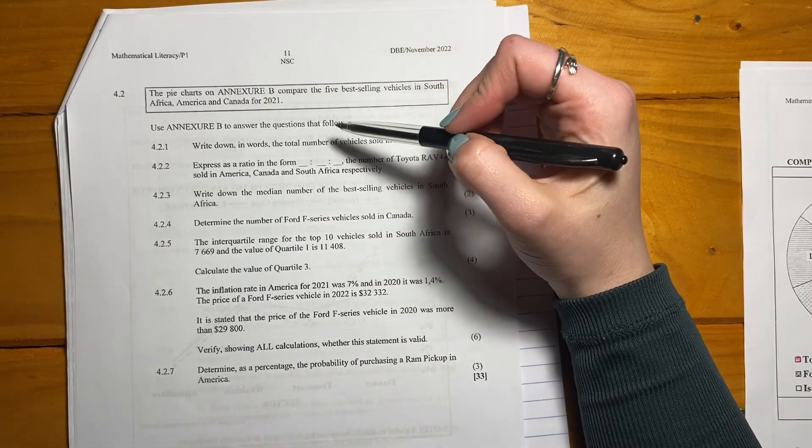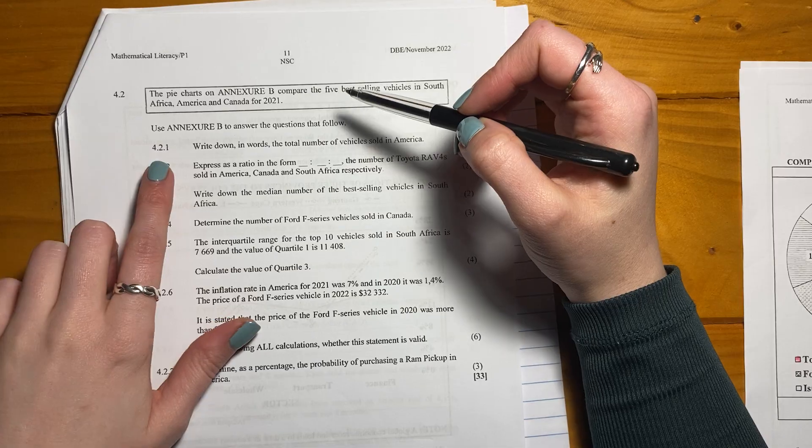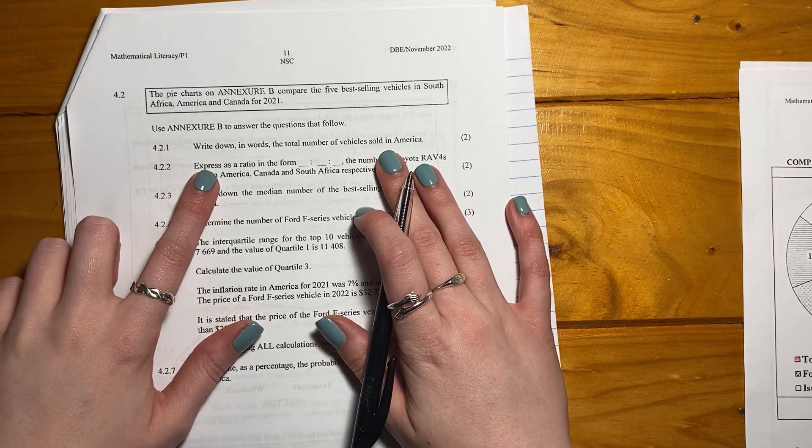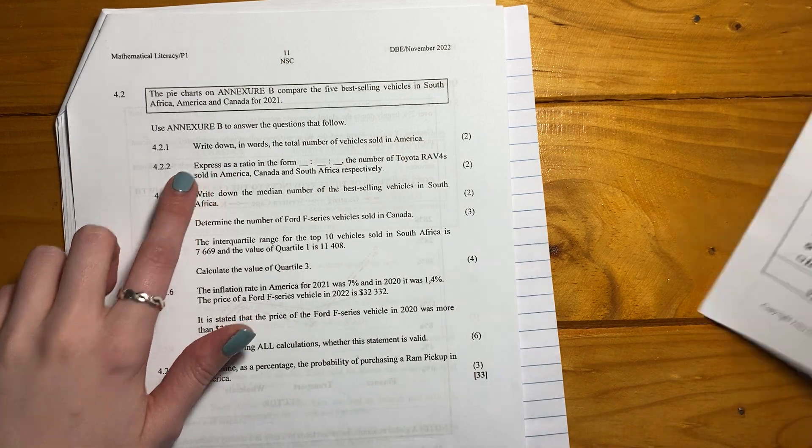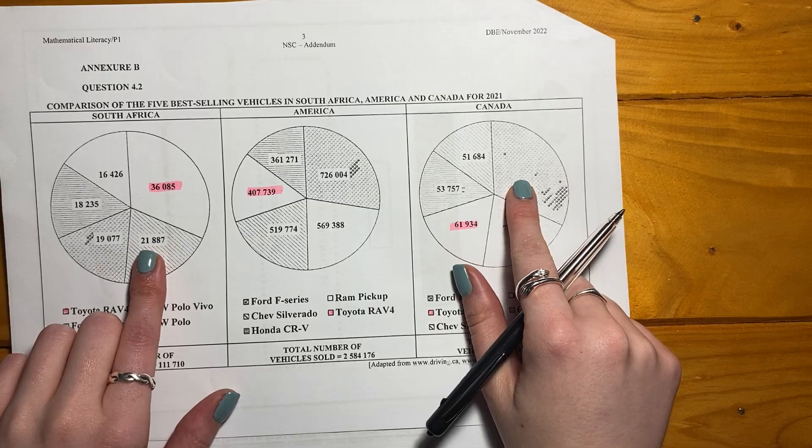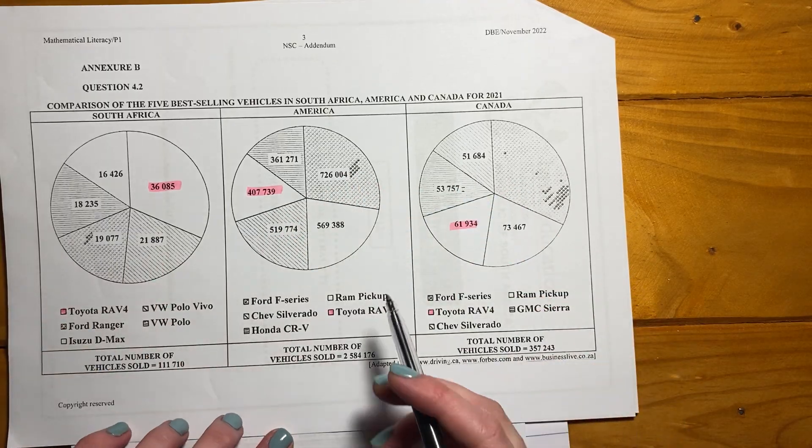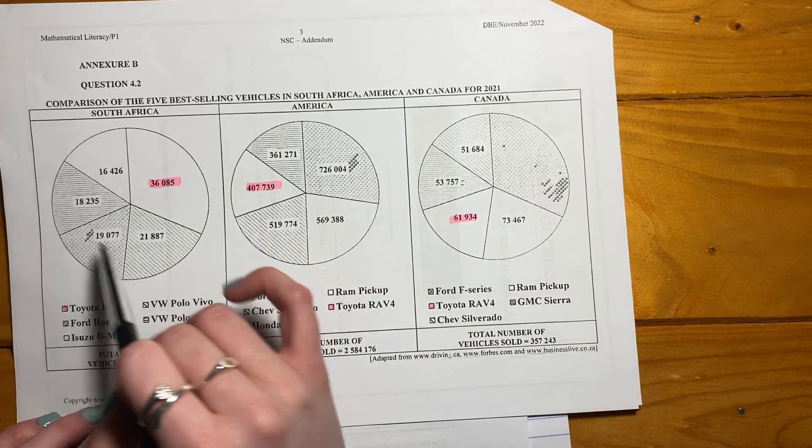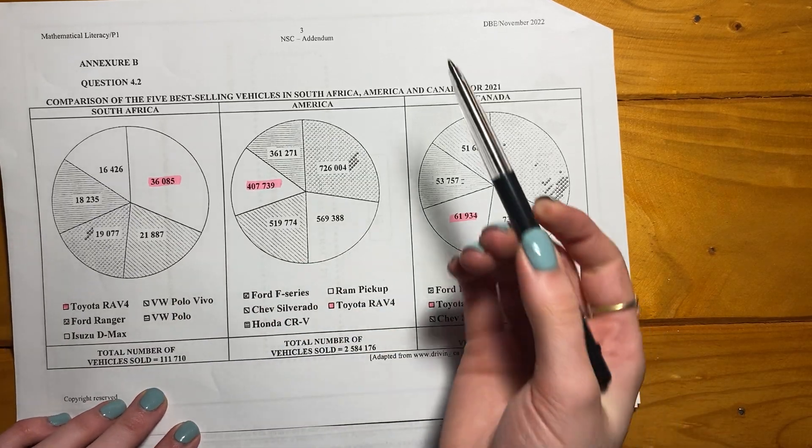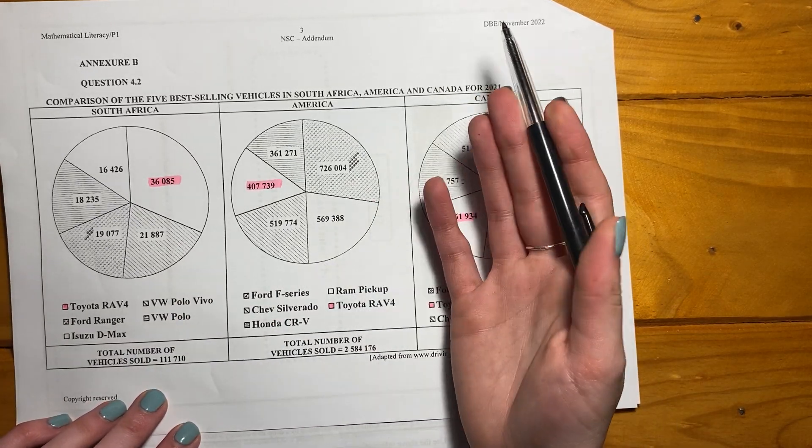Use Annexure B to answer the questions that follow. 4.2.1, write down in words the total number of vehicles sold in America. Let's look. There is South Africa, there's America, there's Canada. We're looking at America. If you look here are the splits of the cars, but the totals are given here at the bottom. If you wanted to, you could go add all these up and it'll give you the total, but no need because it's actually given to you.